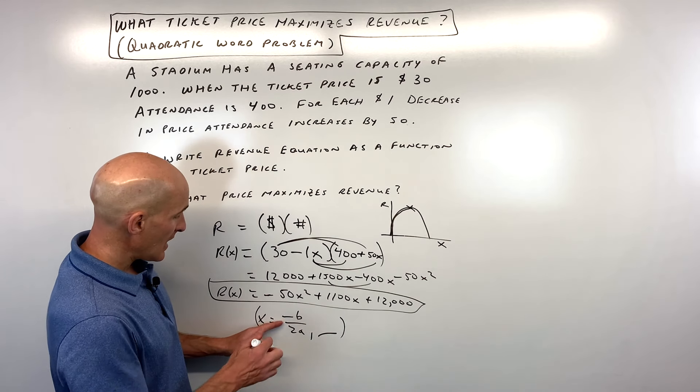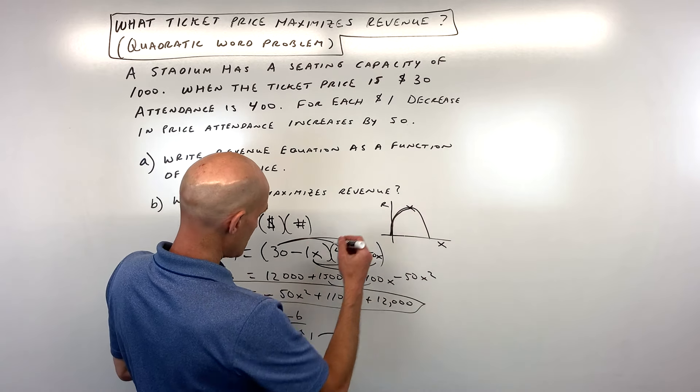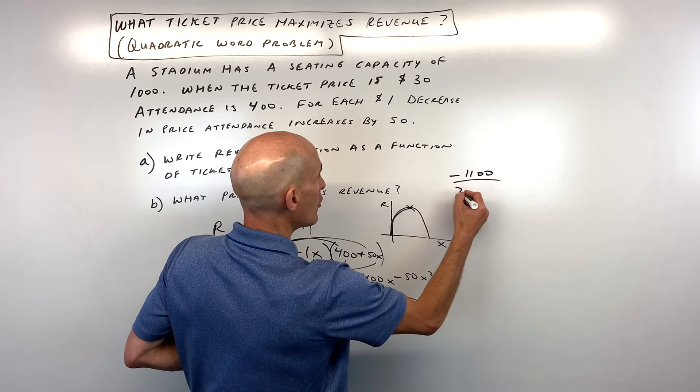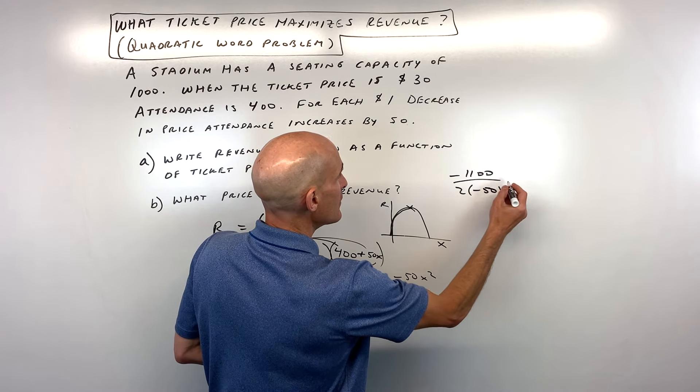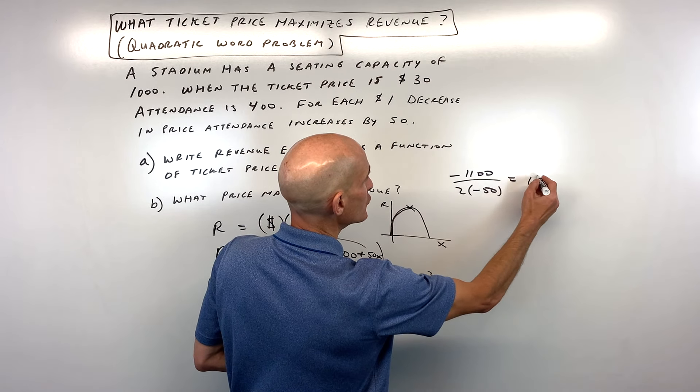So here we've got a, b, and c. So the opposite of b over 2a. Let's put that over here. So negative b would be negative 1100 over 2 times a which is negative 50. So that comes out to 1100 over 100 which is equal to 11.